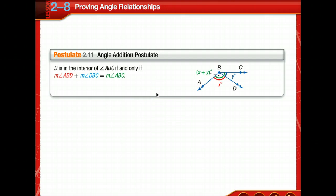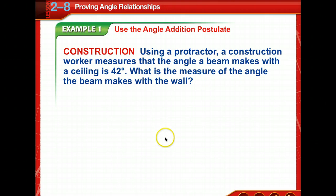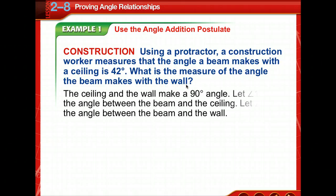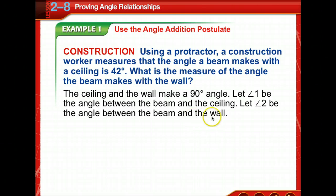Let's apply this. Using a protractor, a construction worker measures that the angle a beam makes with a ceiling is 42 degrees. What is the measure of the angle the beam makes with the wall? The ceiling and the wall make a 90-degree angle — just look up at your room. We'll let angle one be the angle between the beam and the ceiling, and angle two be the angle between the beam and the wall.